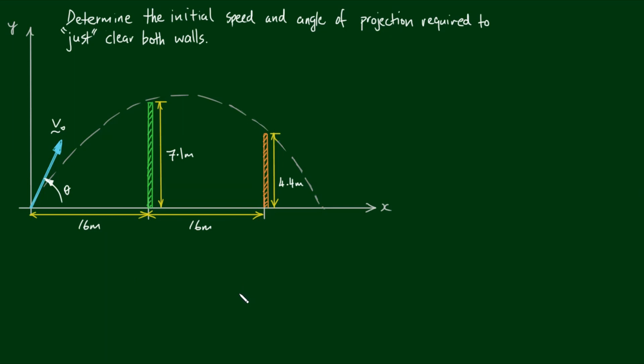Okay, the first thing to note is that this question doesn't make any mention of time, which actually simplifies this problem a lot. Because the only equation we're going to need is the equation for the trajectory: y of x equals x tan theta minus x squared g divided by 2v0 squared times 1 plus tan squared theta.